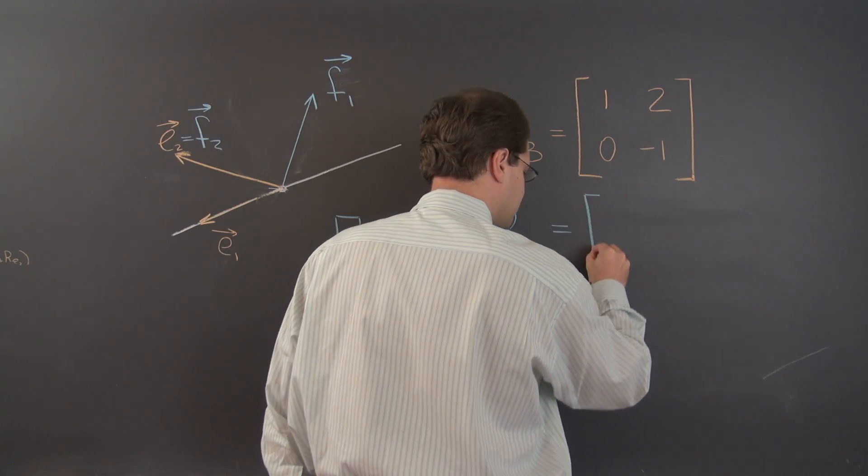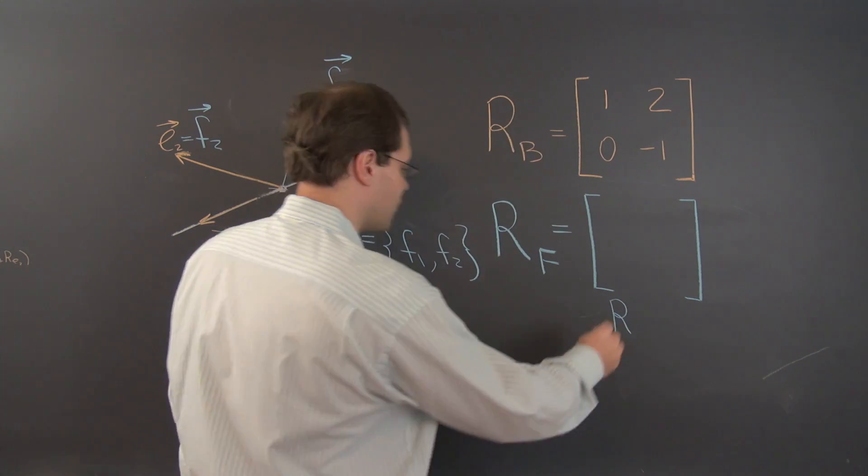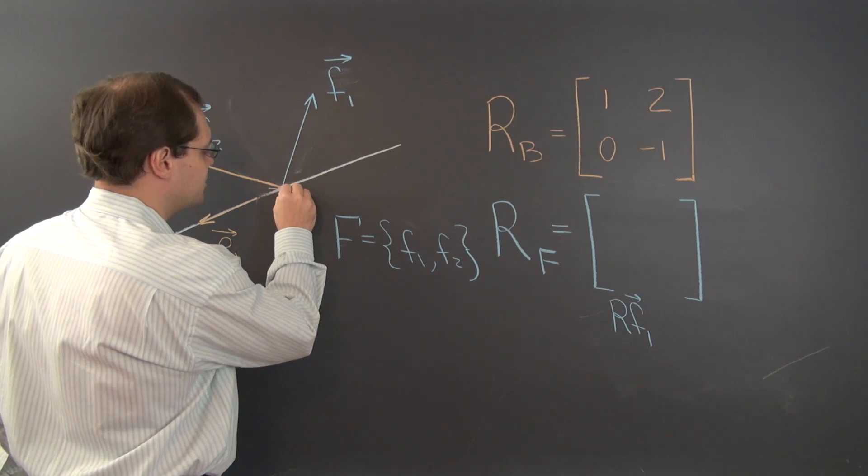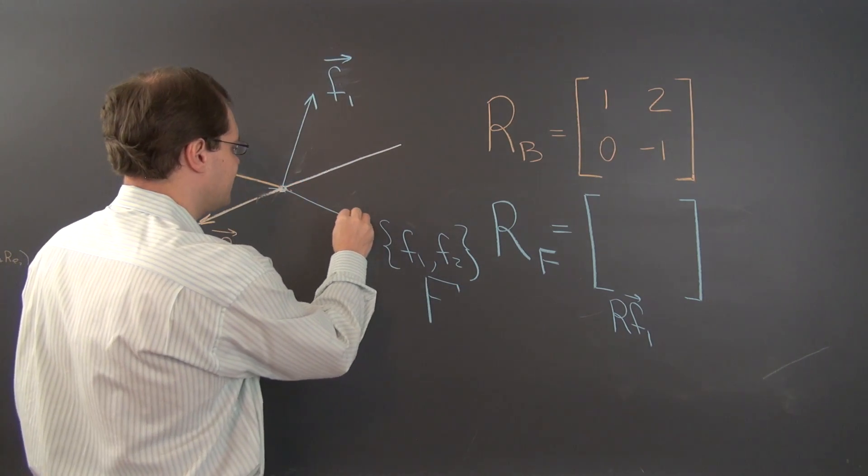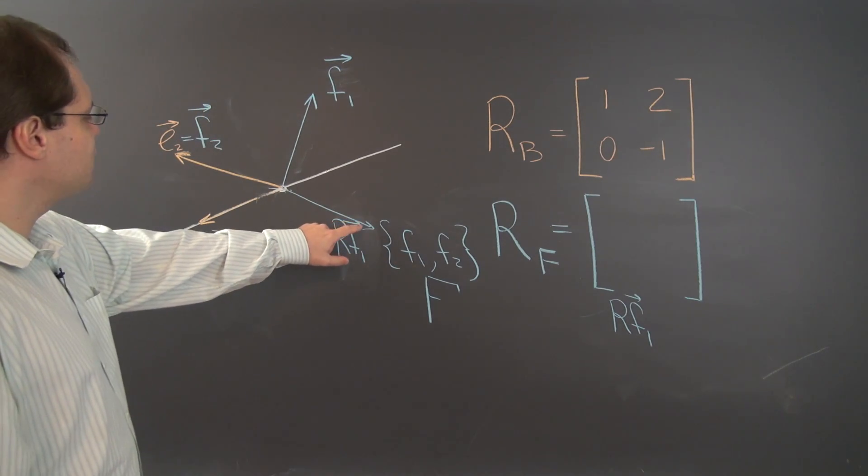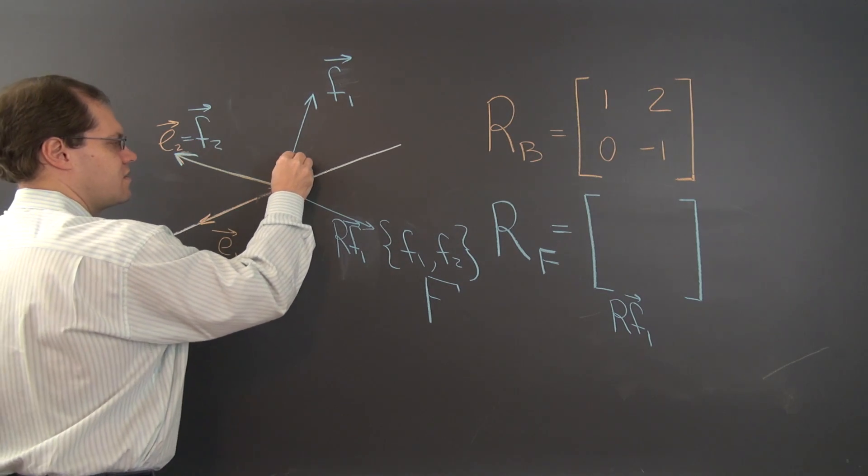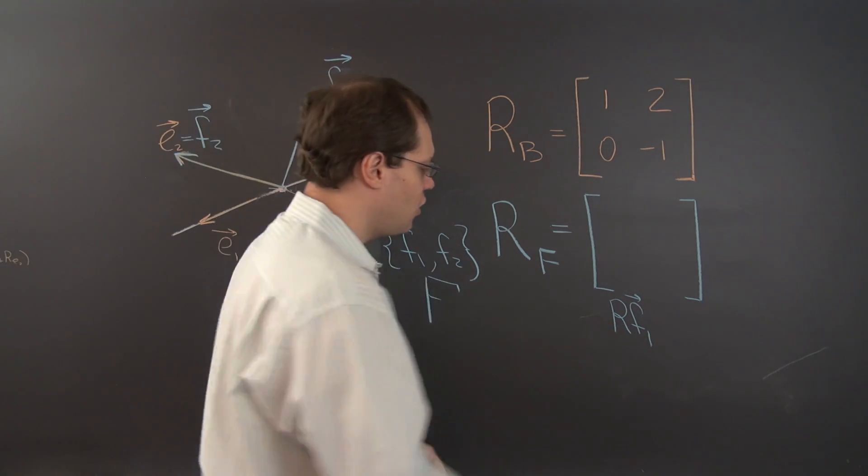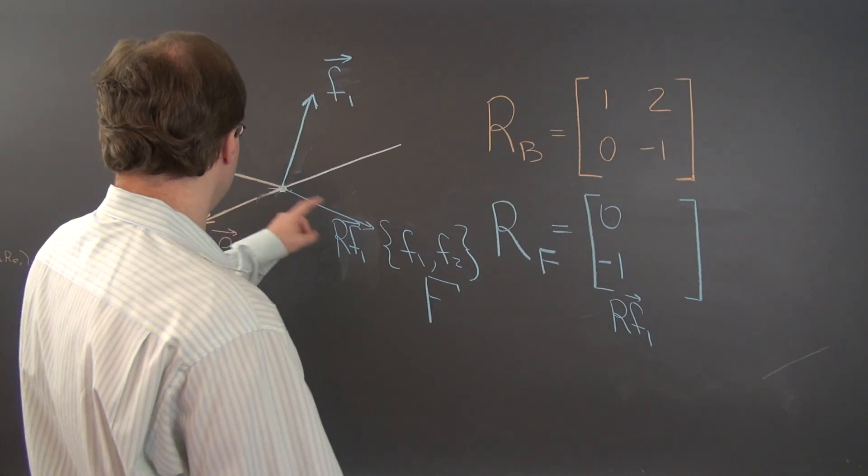It's also a two by two matrix and once again it's being constructed column by column. The first column will represent r of f1. So f1, r of f1 is of course this vector right here. This is r of f1, and we now have to decompose this resulting vector in terms of the same basis f1, f2. Naturally it is minus f2, so the components of this vector are 0, negative 1.